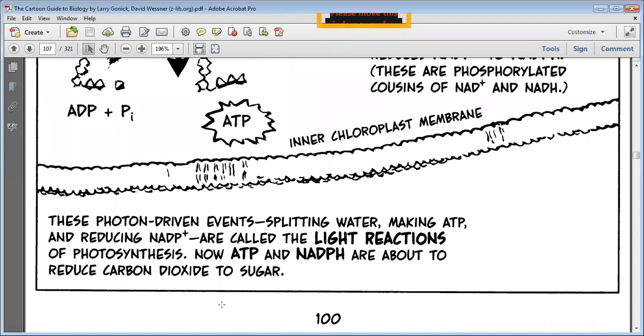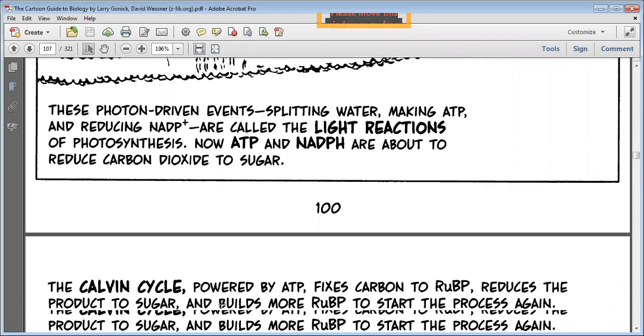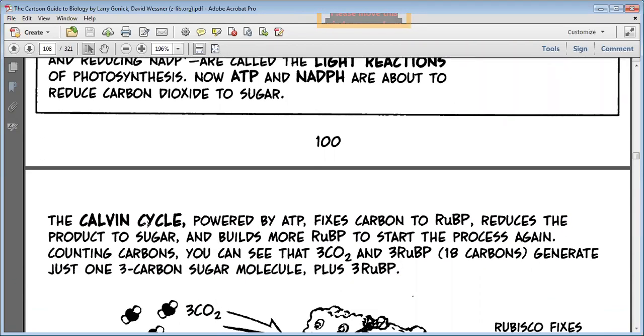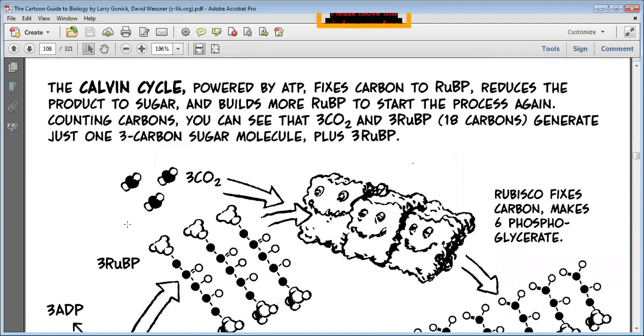See, this is ADP, adenosine diphosphate. When one phosphate group joins to adenosine diphosphate it becomes adenosine triphosphate. These photon-driven elements splitting water, making ATP and reducing NADP+ are called the light reactions. You've studied light reactions and dark reactions. If not, you will study them in class 11th. This is the Calvin cycle. This is class 11th course. If you don't understand, leave it, just read it.